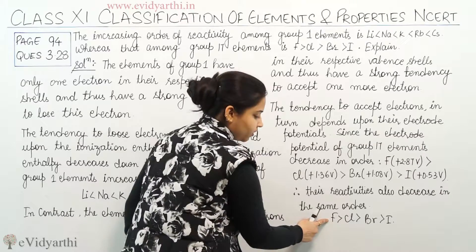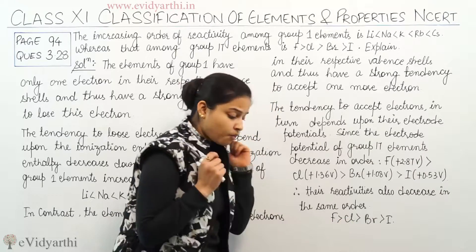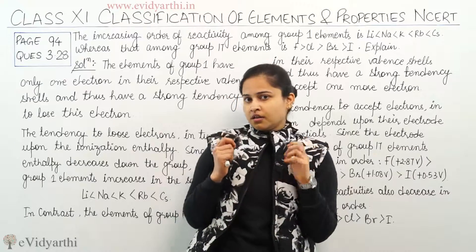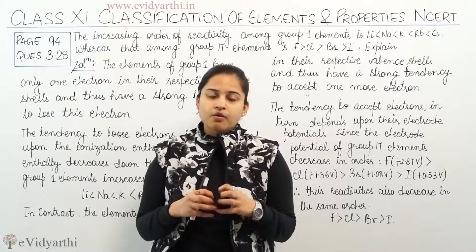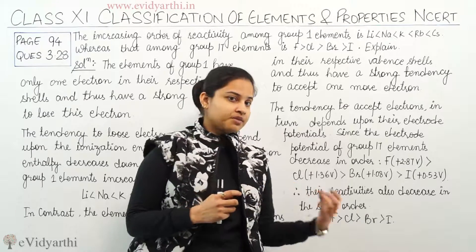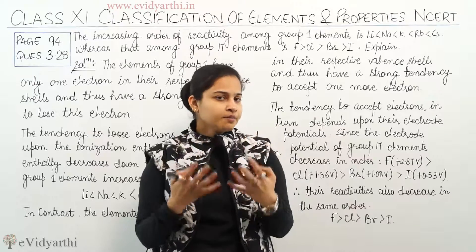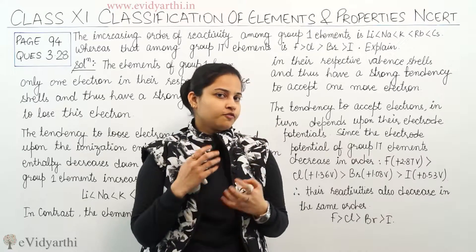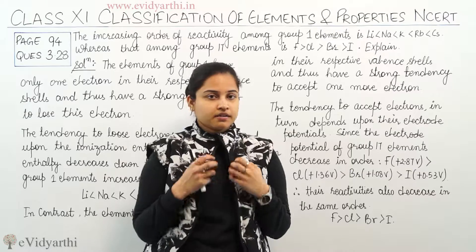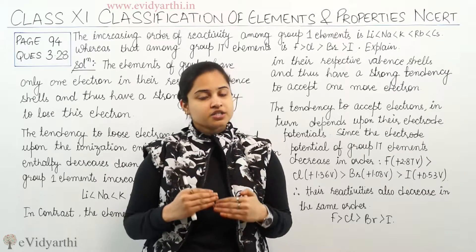So the highest reactive element is fluorine, then chlorine, then bromine, and then iodine. There is one more reason which I think I should discuss about the reactivity of Group 17 elements in this order. Moving on to the next reason about why there is decreasing reactivity of Group 17 elements when we move down the group.